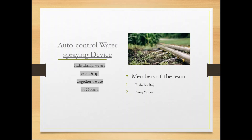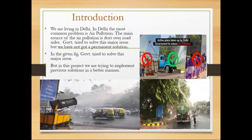Our topic today is how we can manage pollution with the help of water in a positive way. We are living in Delhi, which has a major issue of air pollution. The major cause of this is dust over the roadsides. The government tried to solve this issue but failed on a large scale. We have presented some figures which are shown below.